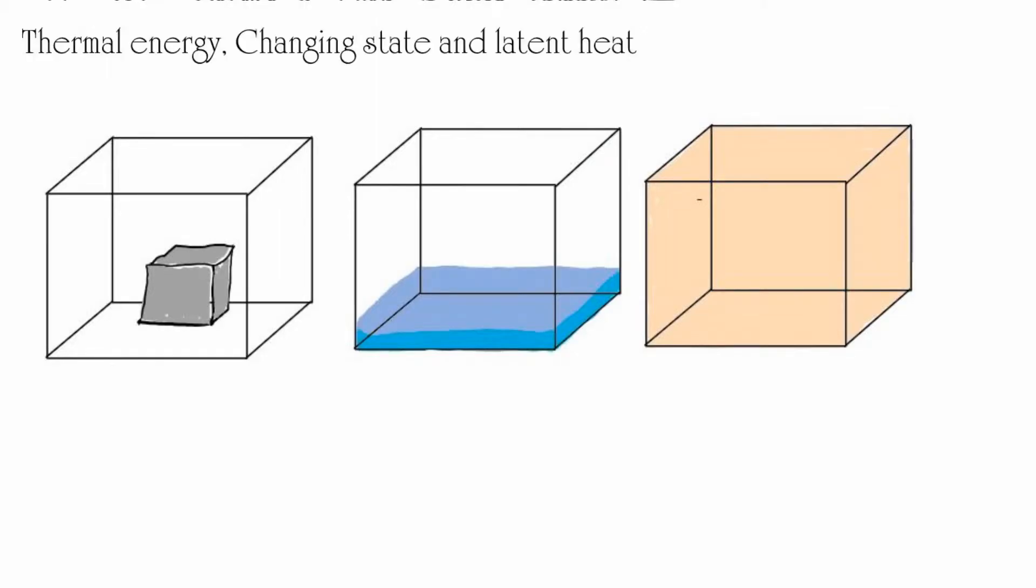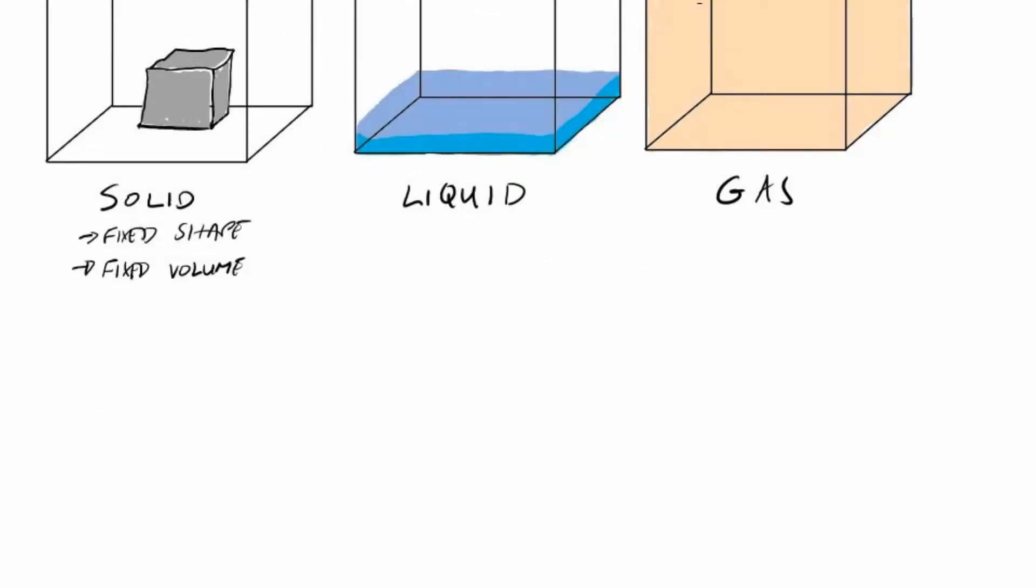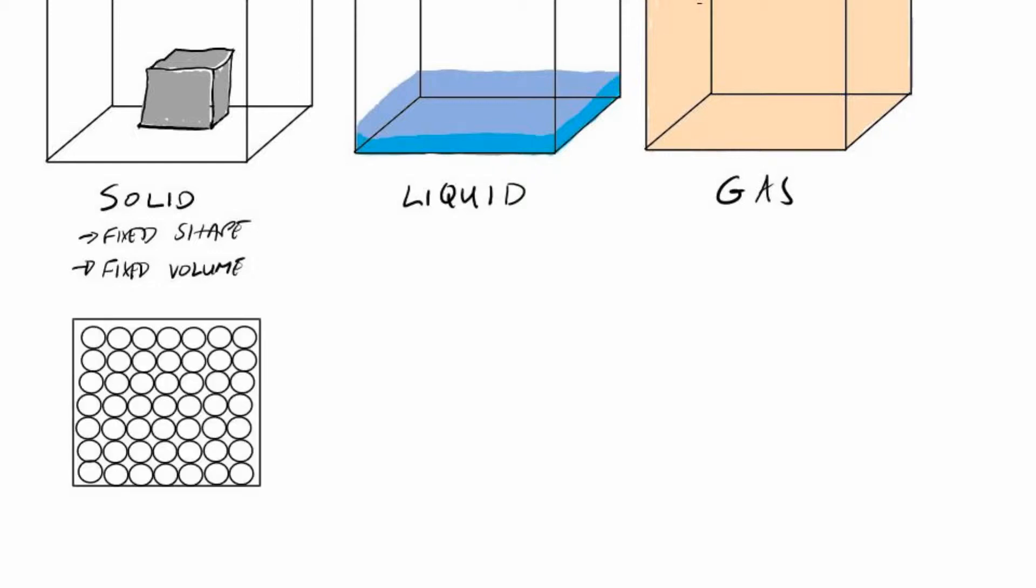We start with solids, liquids and gases. A solid has a fixed volume and a fixed shape, and the molecules in a solid are very tightly packed together.